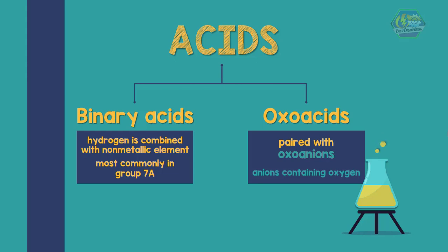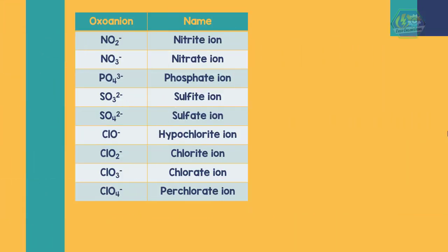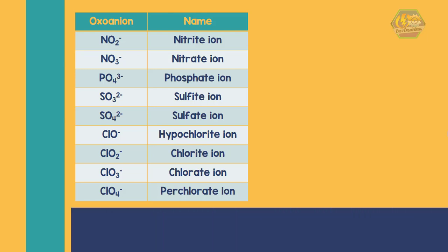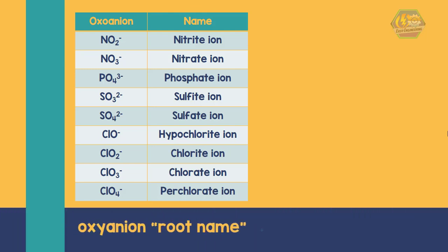Oxo acids are paired with oxo anions. Oxo anions are anions containing oxygen. The technique is to determine the name of the oxo anion. In the table shown are some common oxo anions.